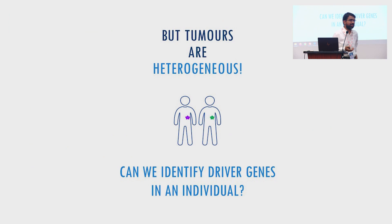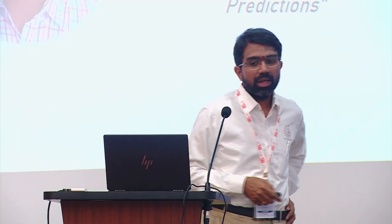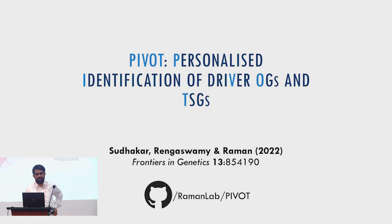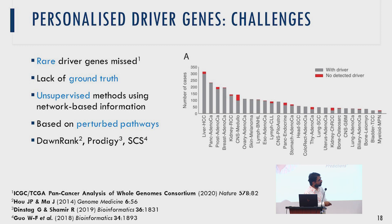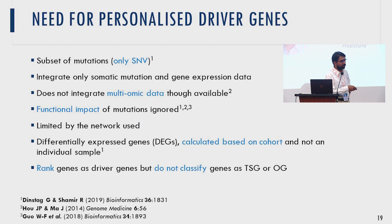The challenge is that tumors are highly heterogeneous — every person's cancer is different, and even in the same person two cancers can have very different etiologies. To identify driver genes at the individual patient level, we built a tool called PIVOT: Personalized Identification of driVer Oncogenes and Tumor suppressors. Many samples have no detected driver genes at all, so PIVOT aims to identify the key causative genes in those samples. It is the first supervised learning method to predict driver genes at this level.